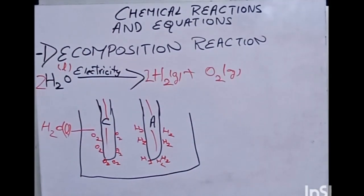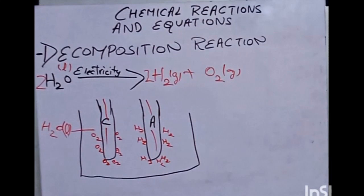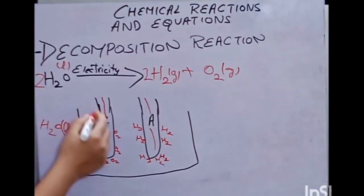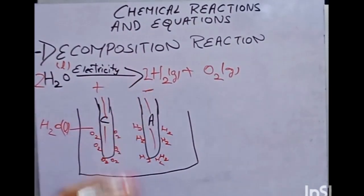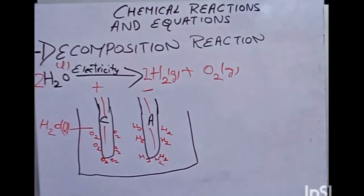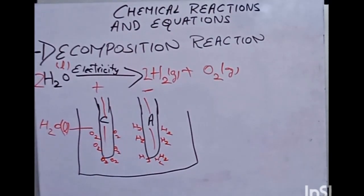One important thing: cathode is your negative terminal and anode is your positive terminal. So the positive terminal (anode) will have hydrogen and the negative terminal (cathode) will have oxygen. A question that can come from this topic is about the gases observed at each electrode during electrolysis.